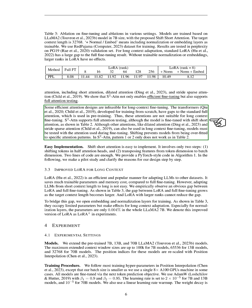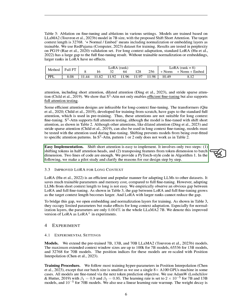Shifting helps prevent models from being overfitted to specific patterns. Implementing shift short attention is straightforward — it involves only two steps: shifting tokens in half-heads, and transposing features from the token dimension to the batch dimension. This can be done with just two lines of code.